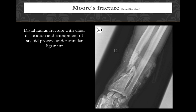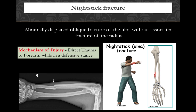Moore's fracture, not very commonly asked, is a fracture of the distal end of the radius with dislocation of the ulnar styloid and entrapment of the ulnar styloid under the annular ligament. Nightstick fractures are isolated fractures of the ulna occurring due to a direct blow, without involving damage to any other component of the forearm, elbow, or wrist — just a transverse or oblique fracture of the ulna from direct injury.